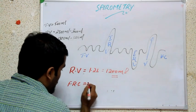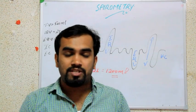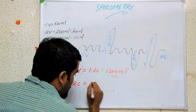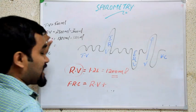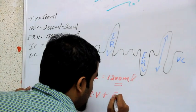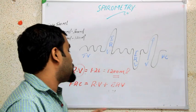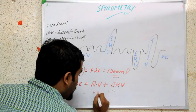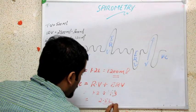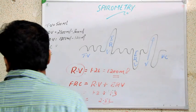Next is functional residual capacity. Capacity is always a sum. After normal expiration, how much volume of air is left inside the lungs? Residual volume is always present, so functional residual capacity equals RV plus ERV. That is 1.2 liter plus 1.3 liter, which equals 2.5 liter.